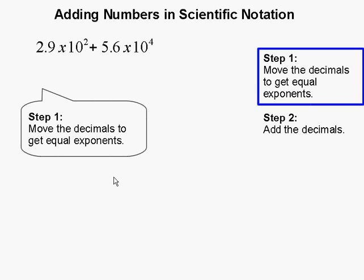Step 1, move the decimal to get equal exponents. An easy way to do this is to change the exponent portion of the scientific notation to be the same.